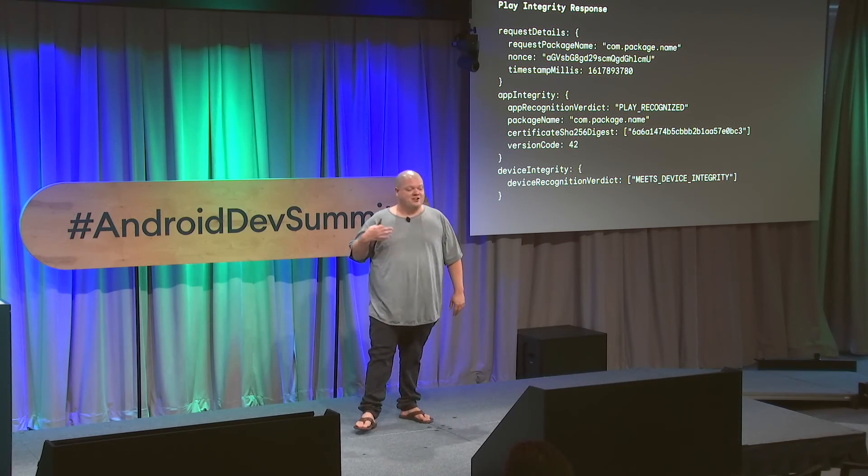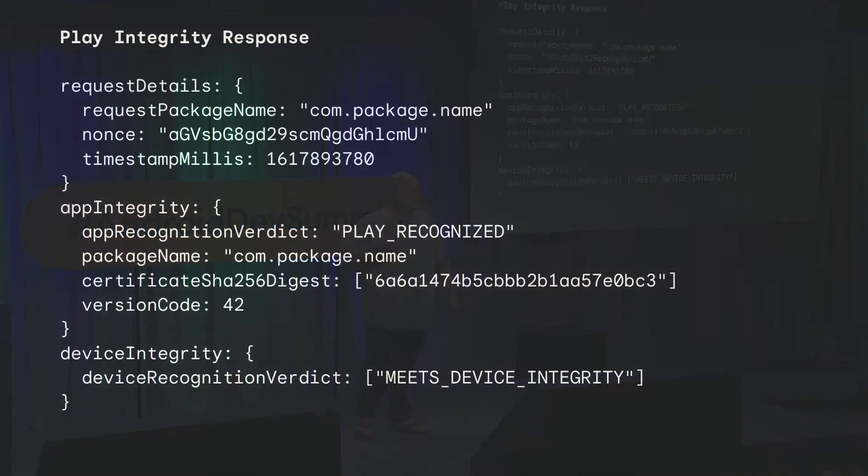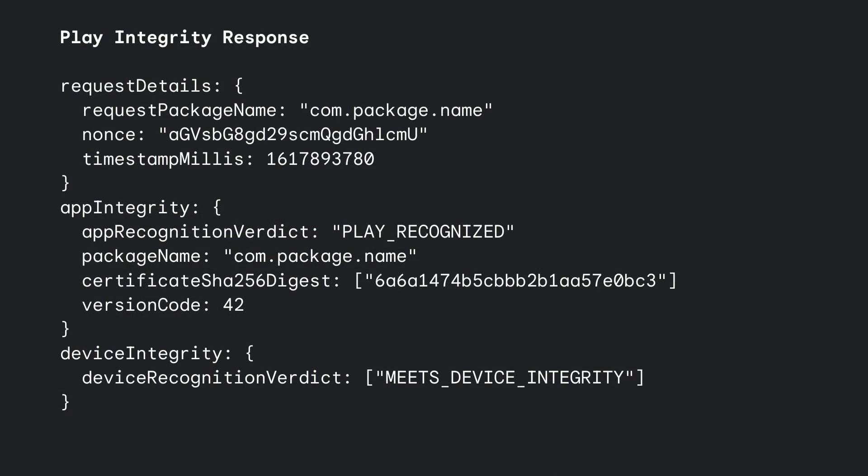Play Integrity API returns approximately five values, two of which lead to clearly understandable decisions. App Integrity is powered entirely by Google Play and checks if the app is recognized and the certificate matches Google Play's records. It can have results of Play recognized, unrecognized version, or unevaluated.